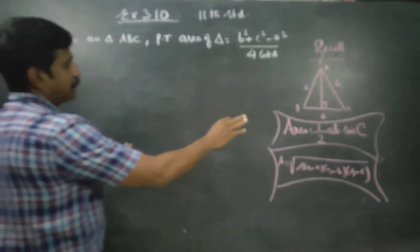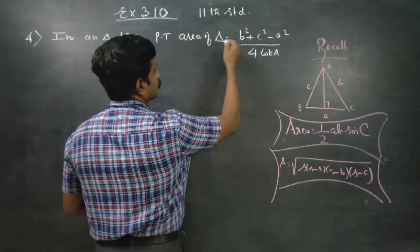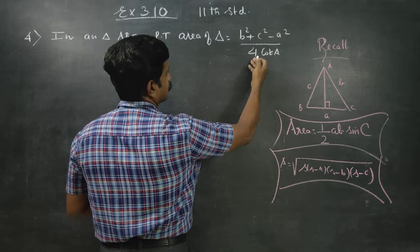Just to recall this formula, prove that area of the triangle is equal to b square plus c square minus a square by 4 cot a.